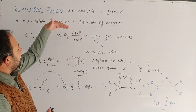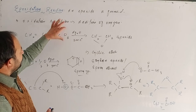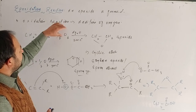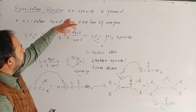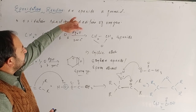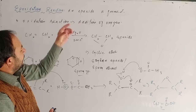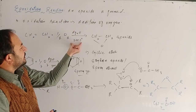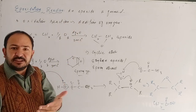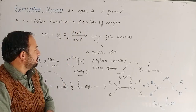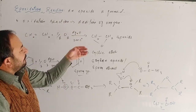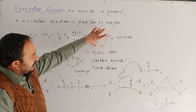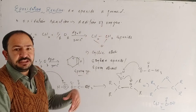If we take oxygen in the presence of a silver catalyst and heat it up to 300 degrees Celsius, this reaction proceeds with oxygen approaching the double bond to form the epoxide.